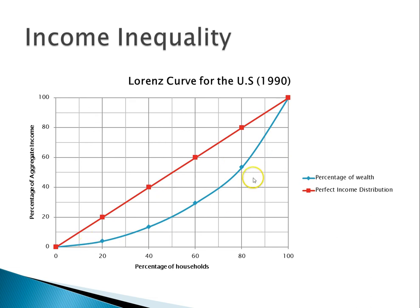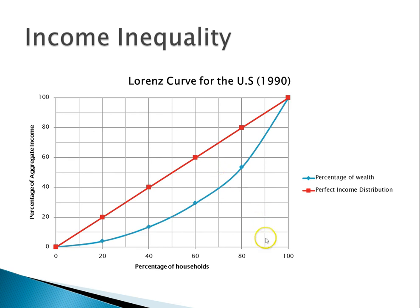A real Lorenz curve will look different — the top 20% will own more wealth than the lower 20%. The Lorenz curve is used to calculate a number representing how much income inequality there is. This number, known as the Gini coefficient, is calculated by taking the area between the line of perfect equality and the Lorenz curve, and dividing it by the total area under the line of perfect equality. A number of zero means there is no income inequality, and a number of one means perfect inequality, where only one person owns all the wealth. A lower number means less income inequality, which is preferable.